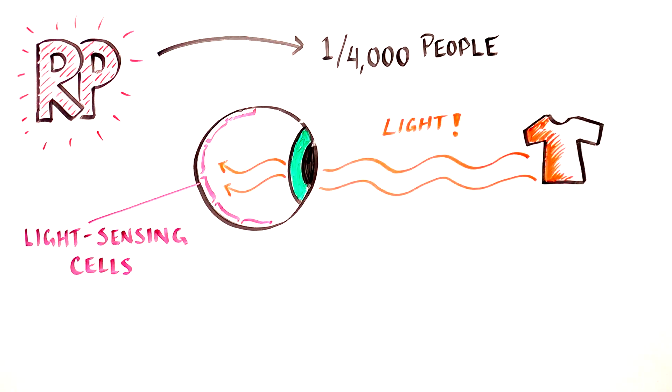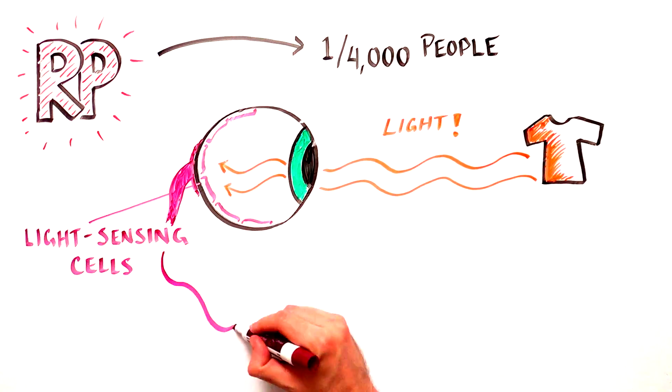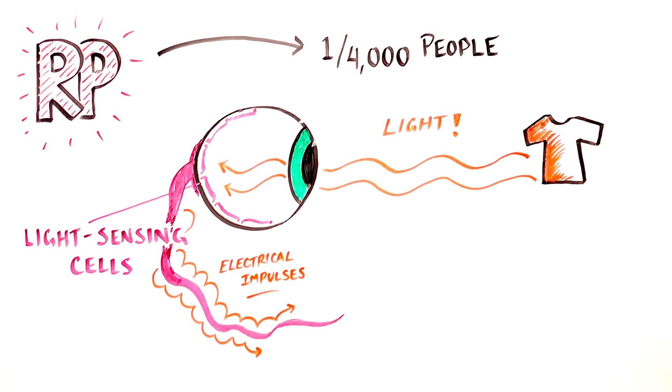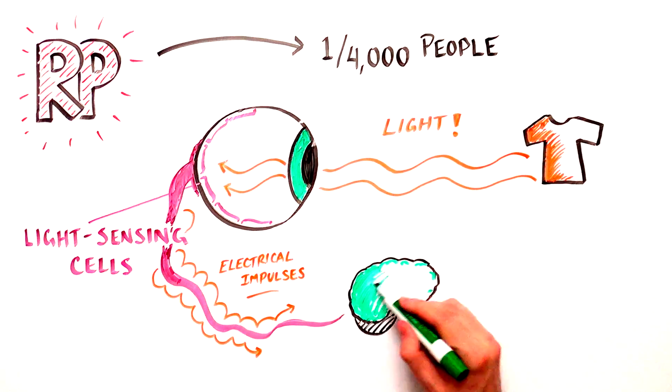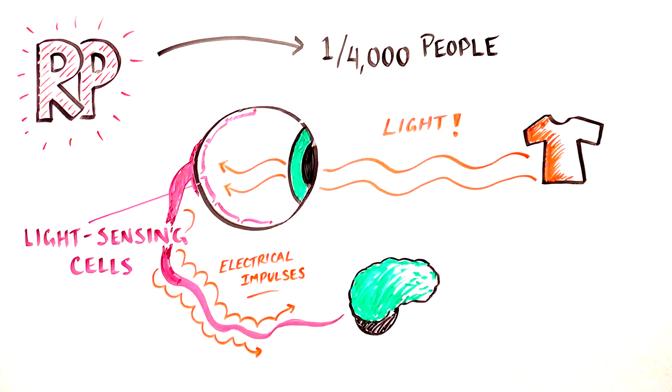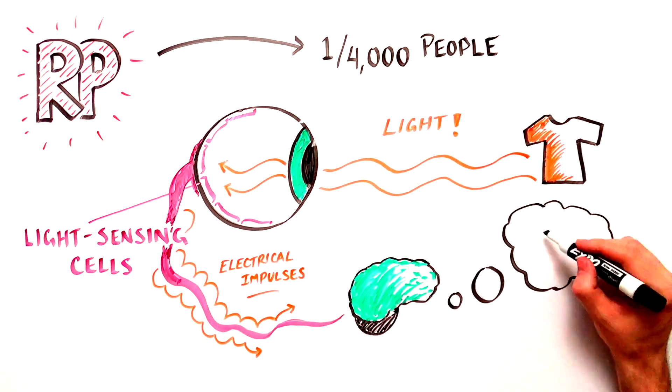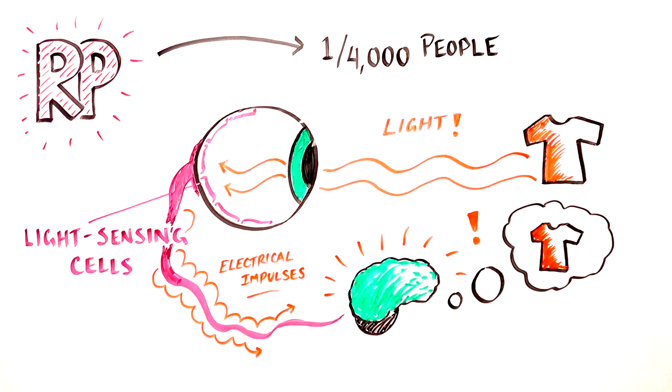When light from our environment hits the retina, which lines the back of the eye, light-sensing nerve cells called photoreceptors transform the light signal into electrical impulses. Through a series of connections, these signals are transmitted back to the brain where additional processing results in the experience of sight.